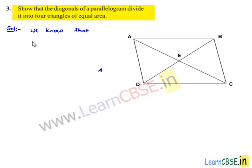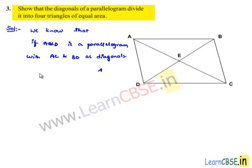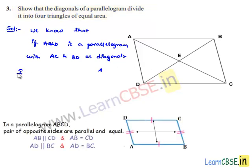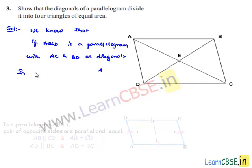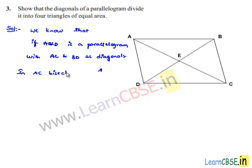We know that if ABCD is a parallelogram with AC and BD as diagonals, let us note the properties of a parallelogram. In a parallelogram, opposite sides are parallel and equal, and also the diagonals bisect each other. Therefore, AE will be equal to EC since BD bisects AC, and ED will be equal to EB since AC bisects the diagonal BD.